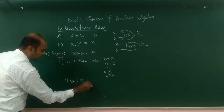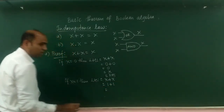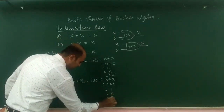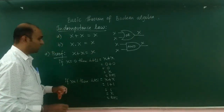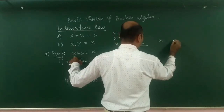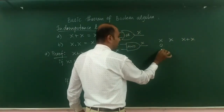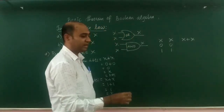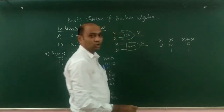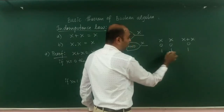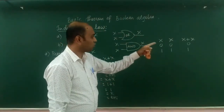If X equals 1, then LHS is X OR X. Substituting gives 1 OR 1, which gives 1. 1 is X, that is RHS. Now for the truth table: we write variable X, and compute X OR X. The value of X is 0 or 1. Performing OR: 0 OR 0 is 0, 1 OR 1 is 1. Comparing the first and third columns, both columns contain the same binary values. Hence X OR X equals X, that is LHS equals RHS.